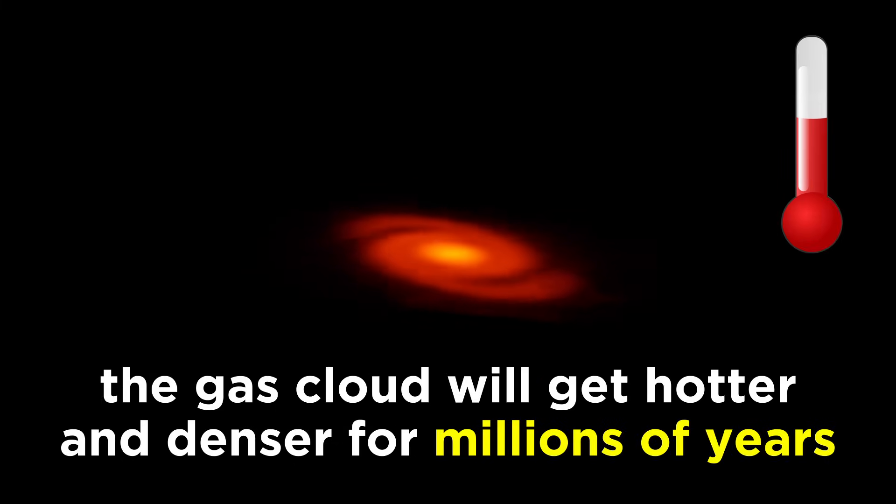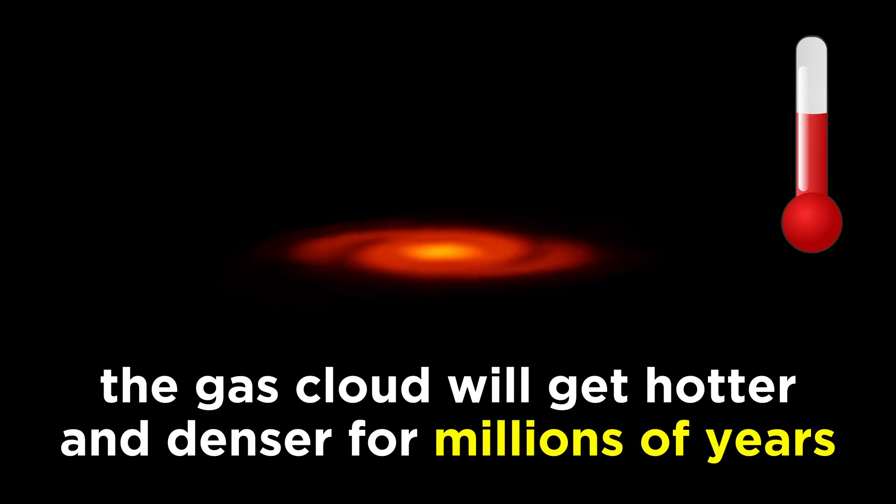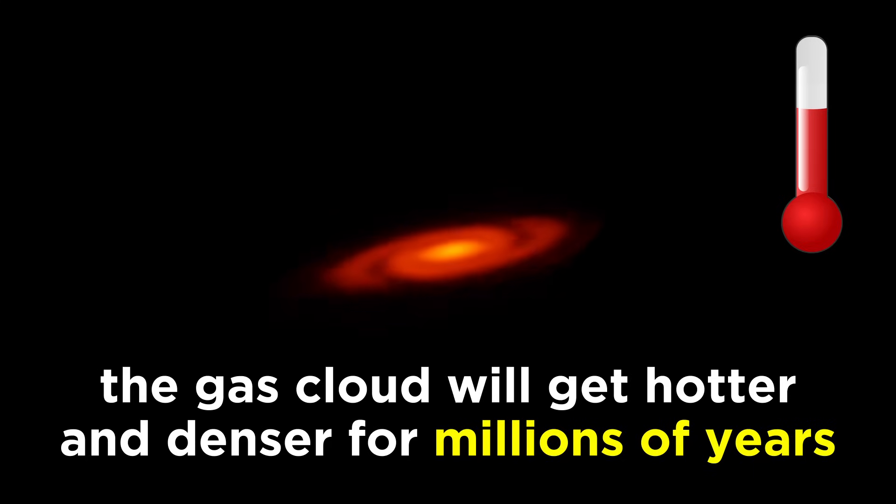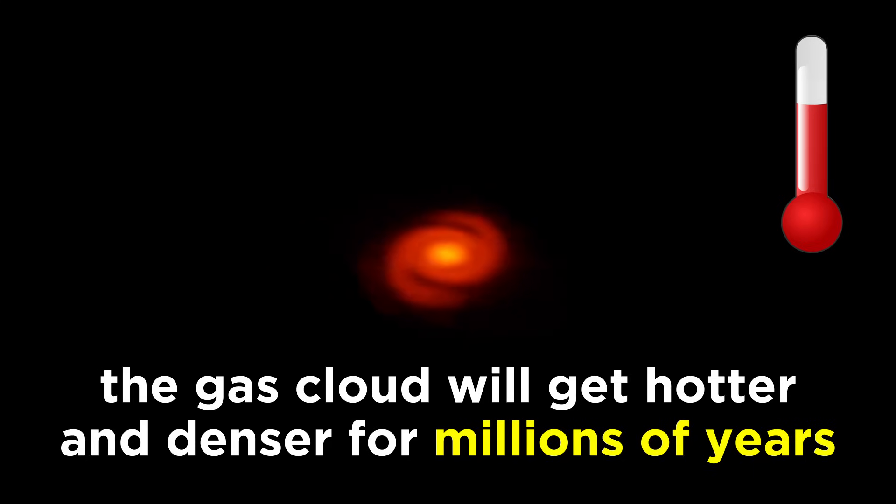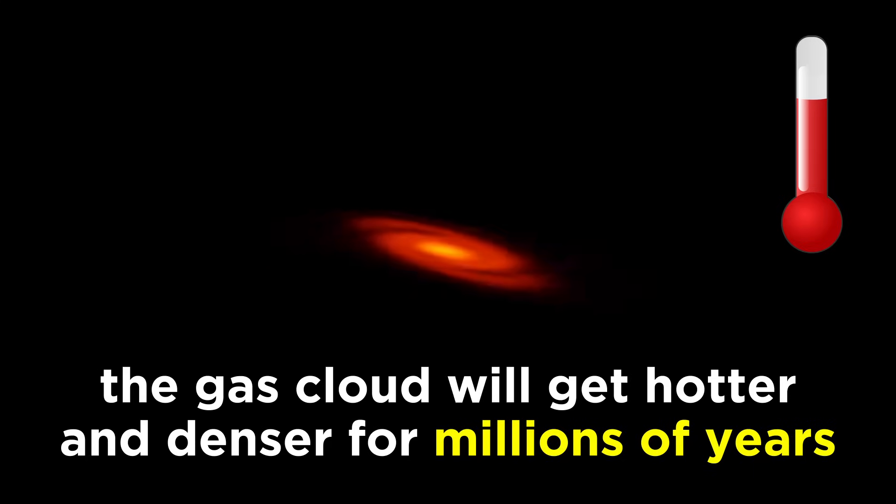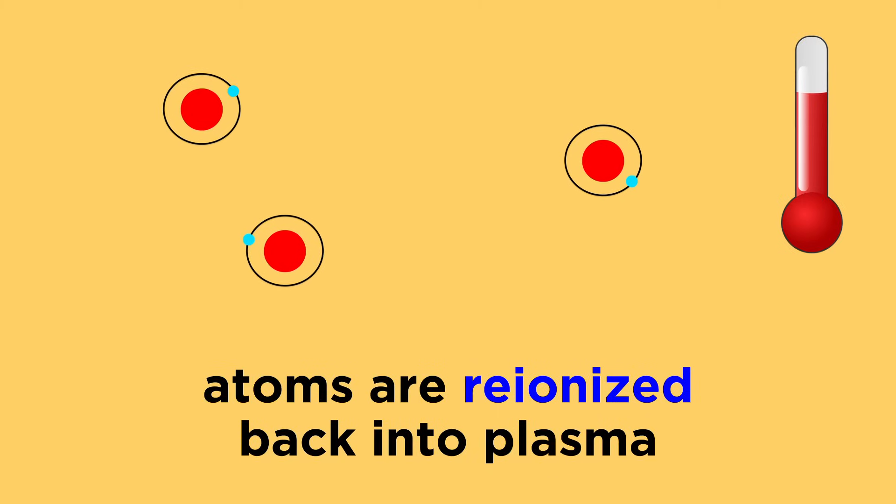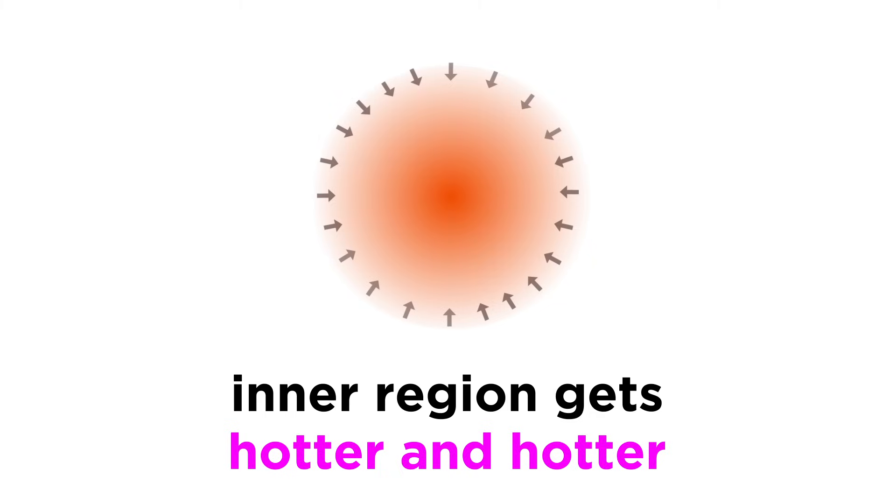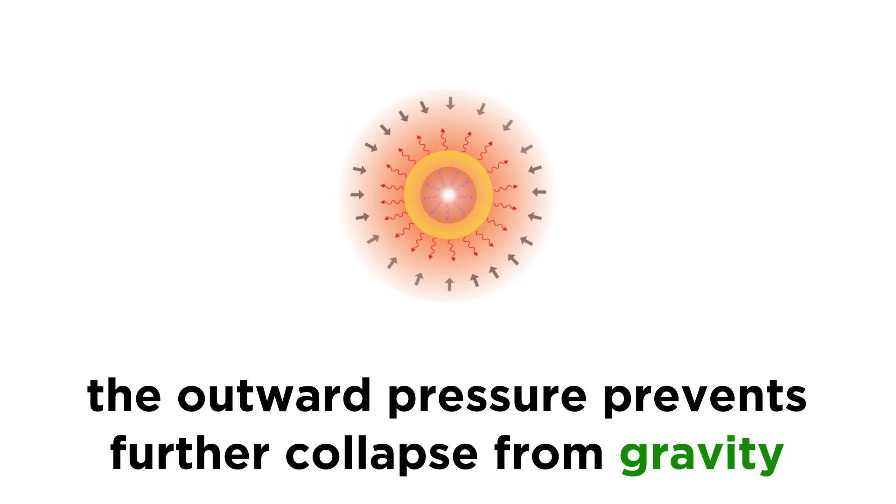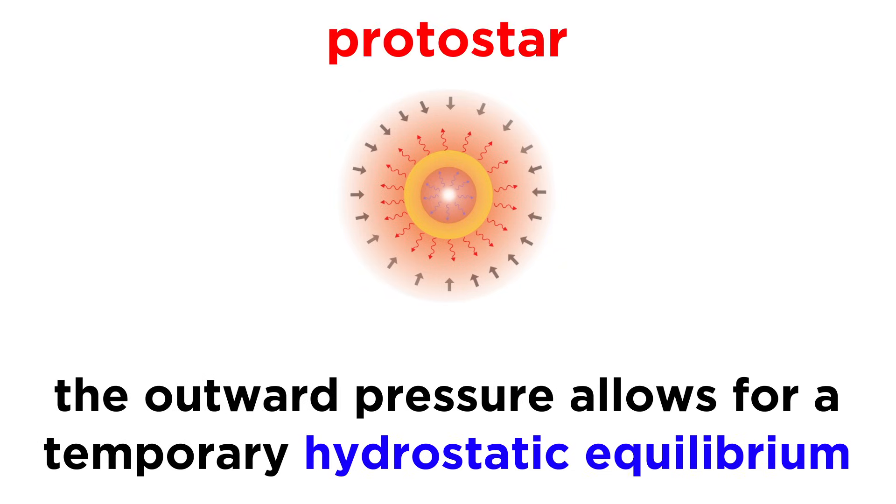The precise physics involved does get rather complicated, but to make a long story short, things get hotter still as the collapsing continues over millions of years, until the atoms are reionized back into plasma, with temperatures getting too hot for neutral atoms to exist. Eventually, the inner region of gas is so hot that the outward pressure supports the gas against further collapse, and we call this a protostar, an object that is in a temporary hydrostatic equilibrium.